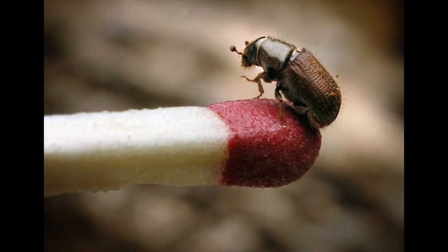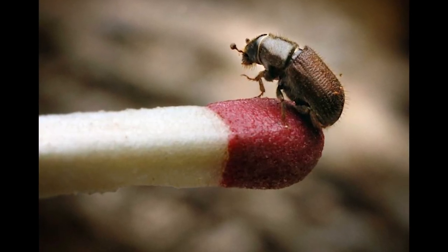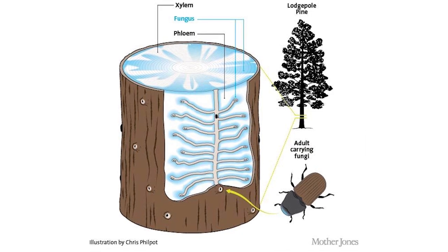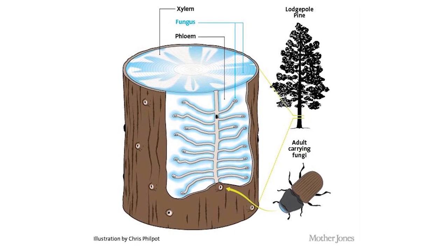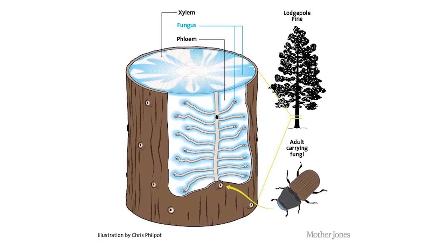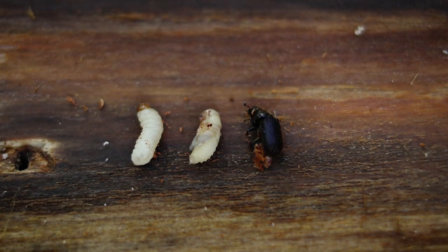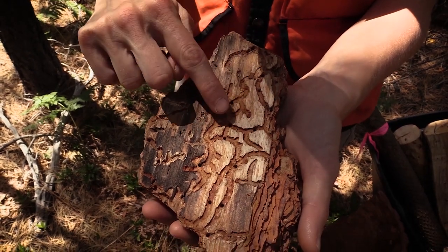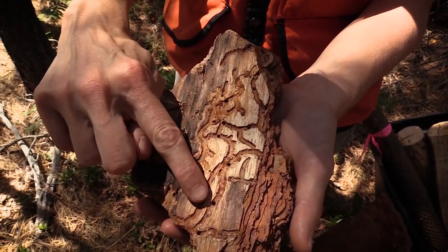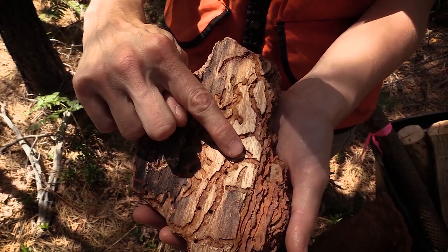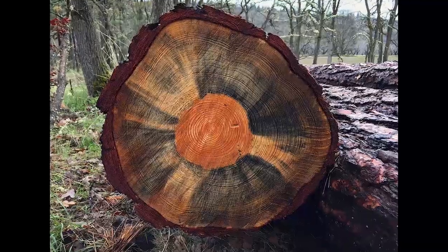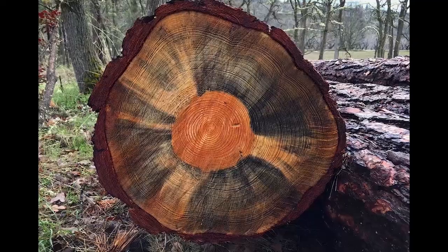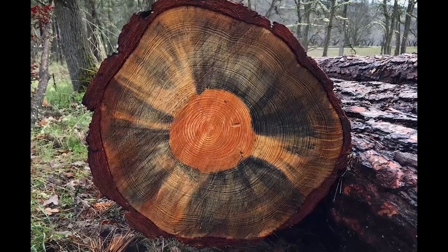Bark beetles are some of our smallest but most damaging forest insect pests. Trees can defend themselves against small numbers of beetles, but large numbers of beetles can overcome a tree's defenses. Bark beetles are about the size of a grain of rice or smaller. They attack trees by burrowing under the bark and creating galleries which girdle or cut off vascular tissues. They also carry a fungus known as blue stain or sap stain, which clogs vascular tissues and hastens tree death.